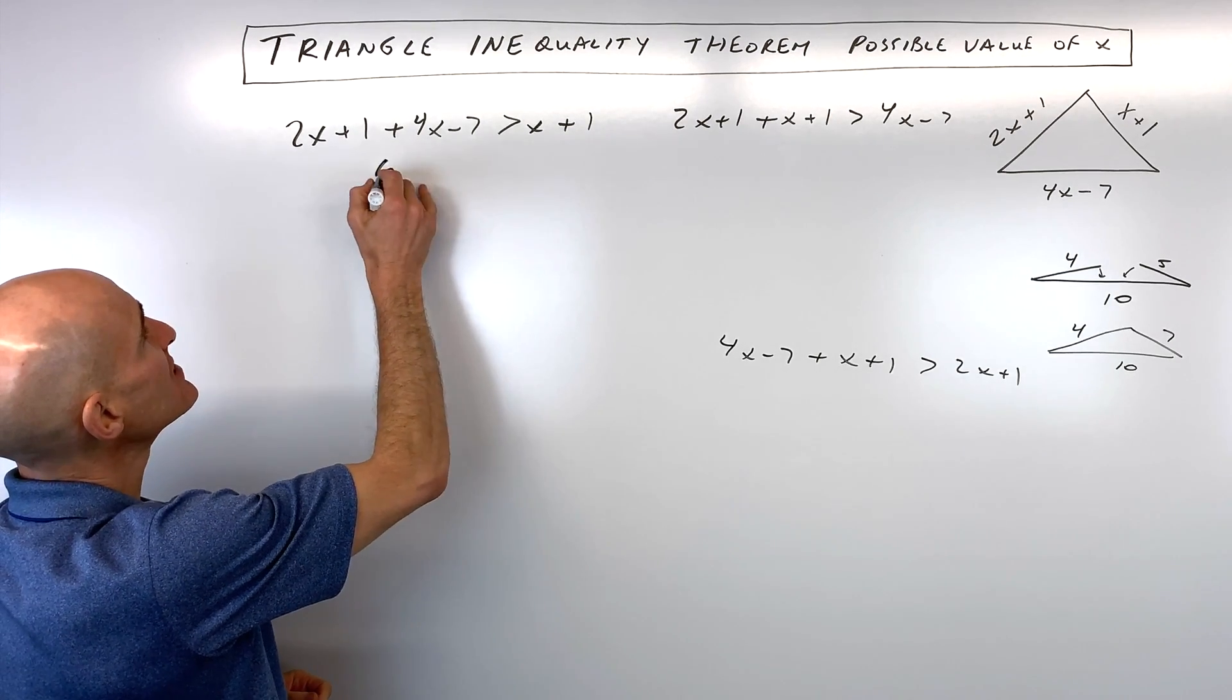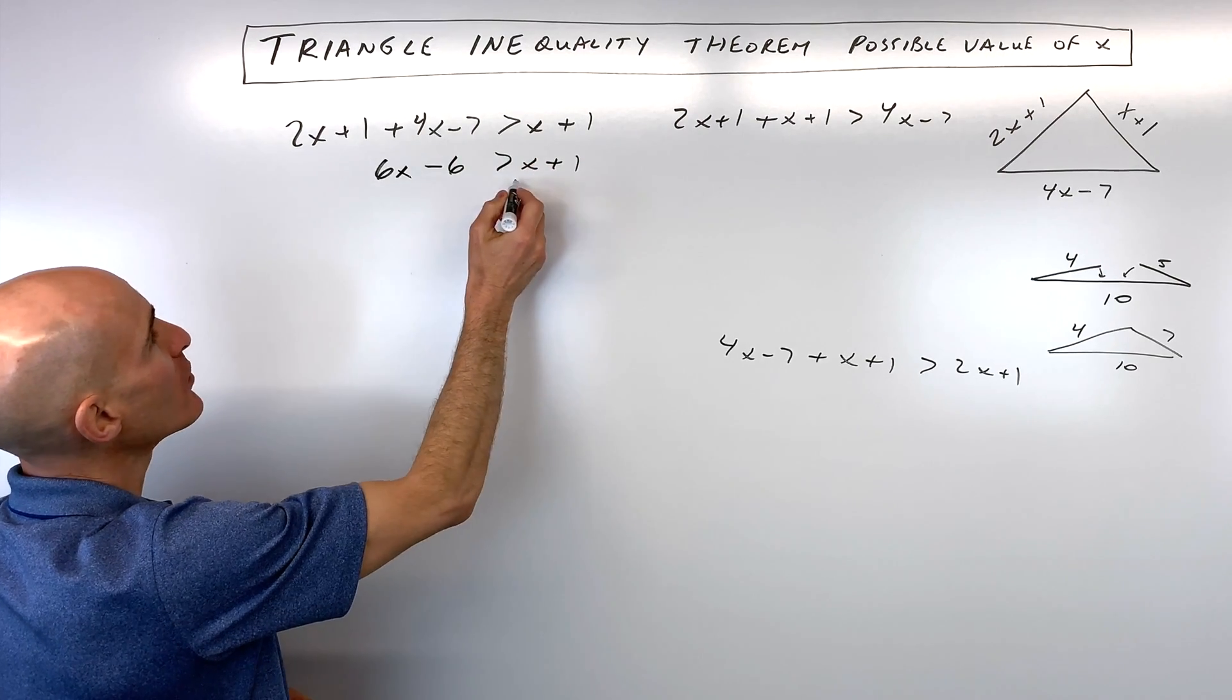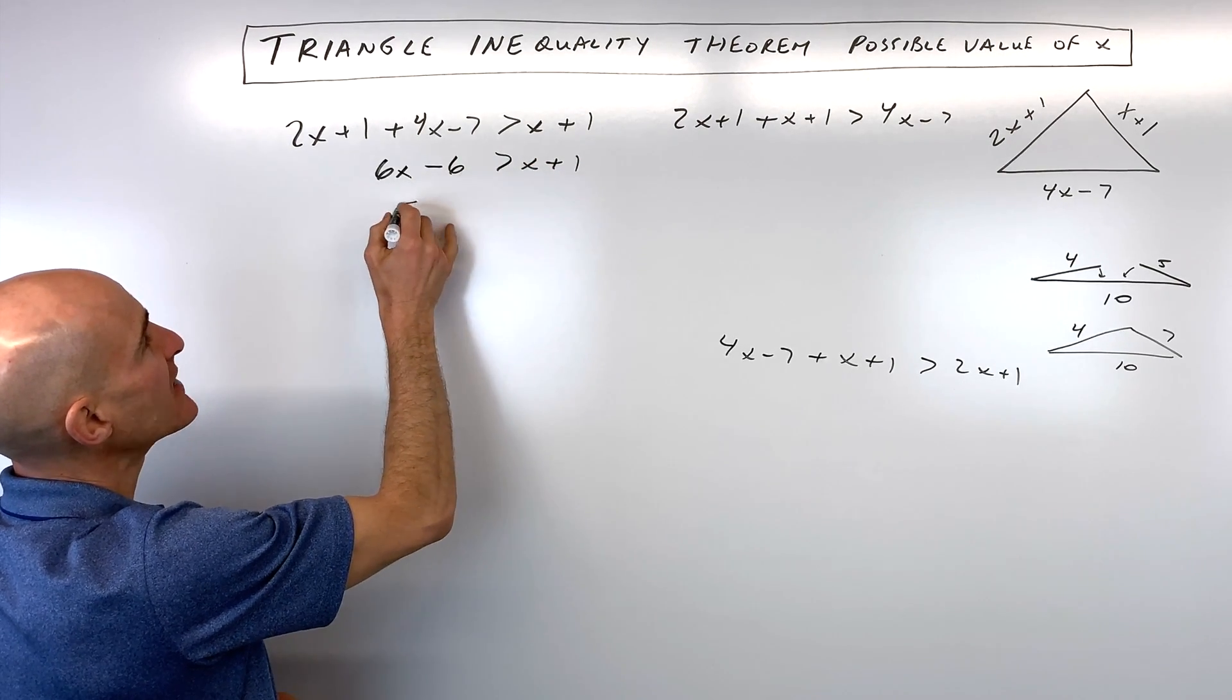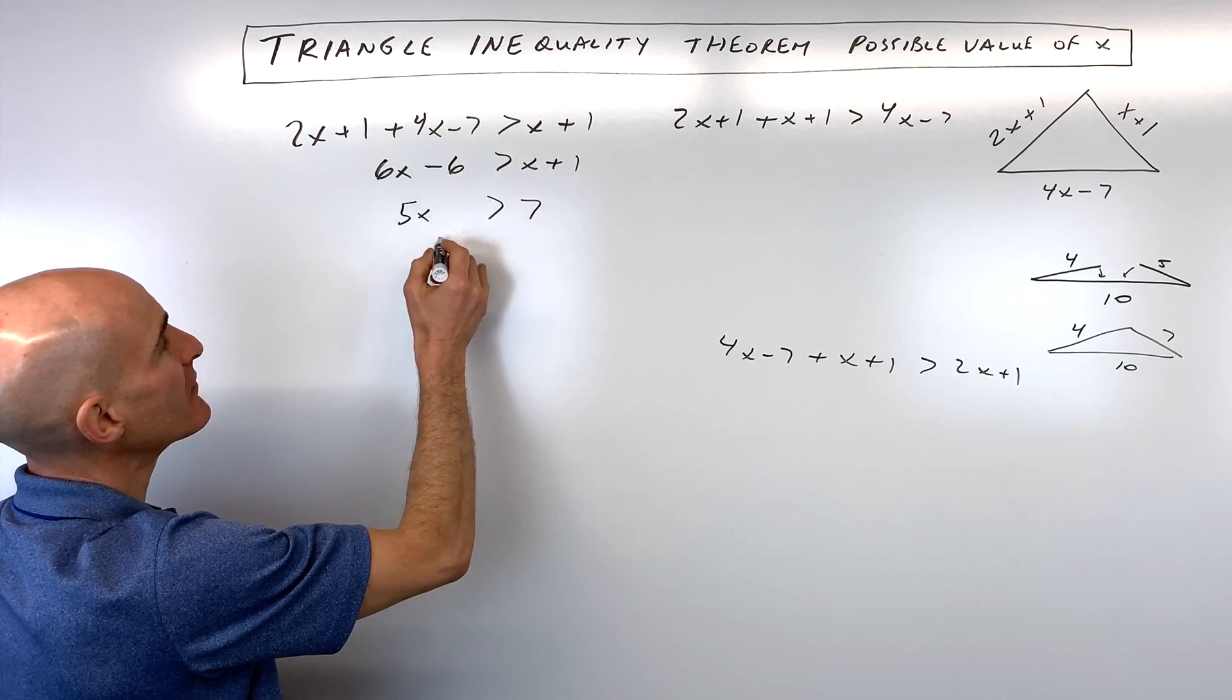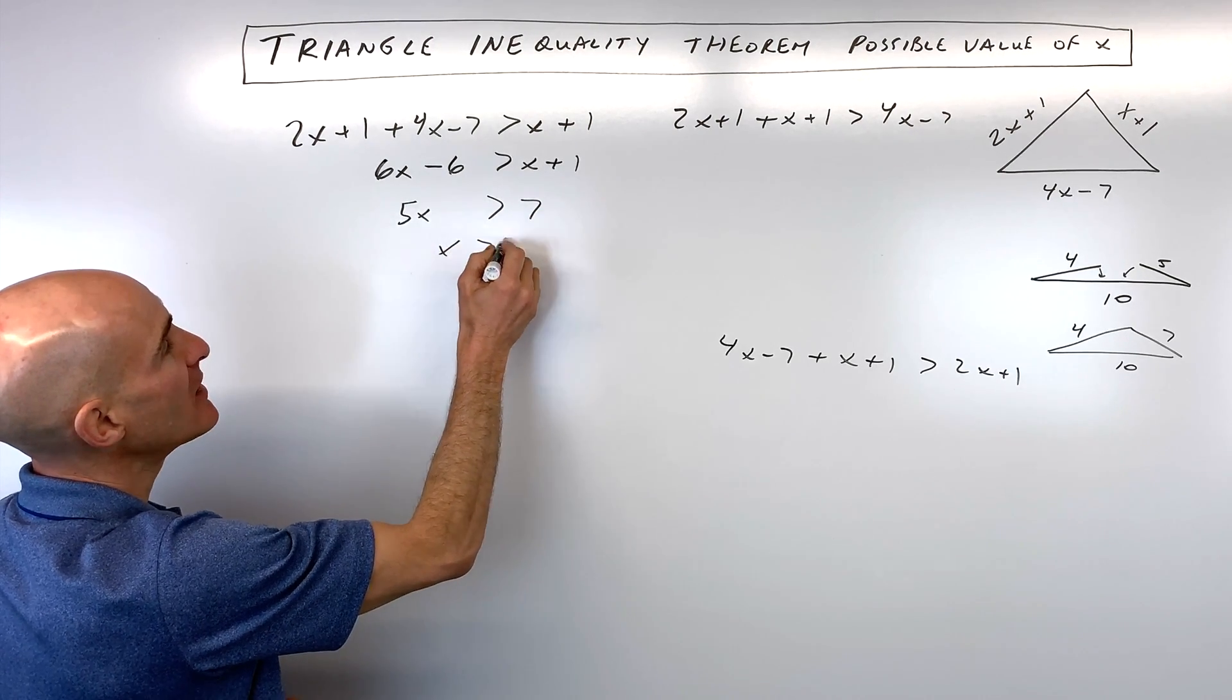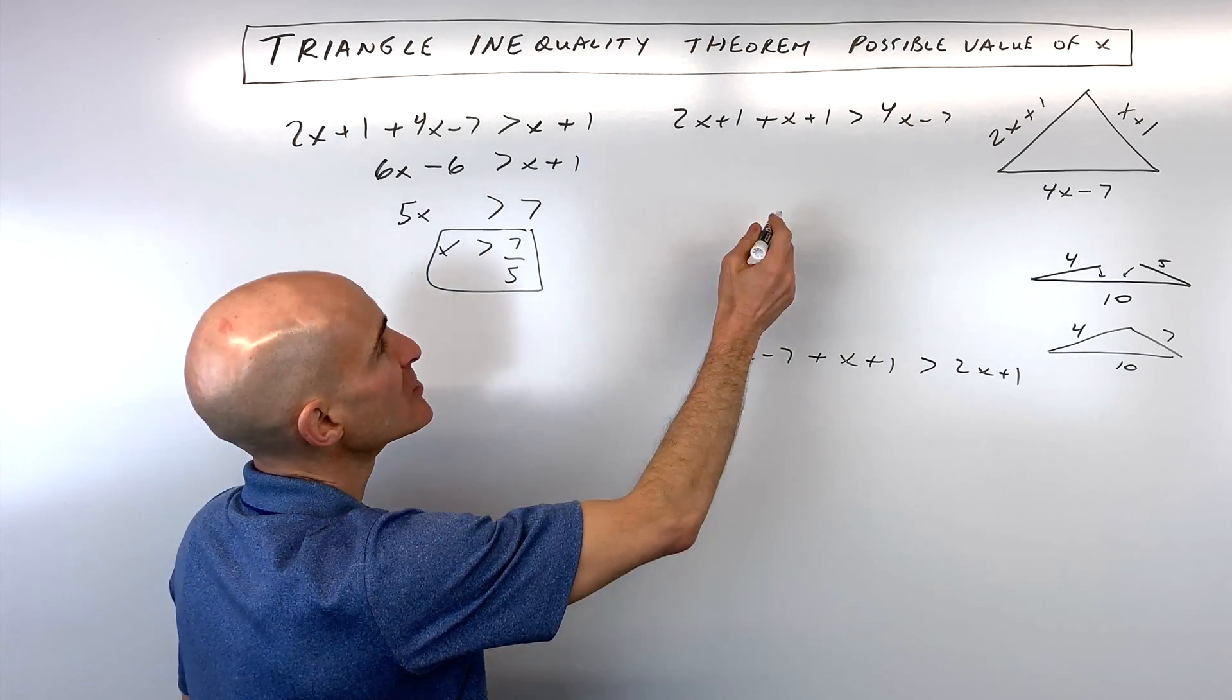Two x plus four x is six x. Positive one and negative seven is negative six. And here what I'm going to do is subtract x from both sides, so that's going to be five x. I'm going to add six to both sides, that's going to give us seven, and if we divide both sides by five, you can see that x is going to be greater than seven-fifths, so that's one constraint.